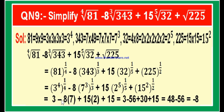This equals 3 minus 8 into 7, plus 15 into 2, plus 15. That is 3 minus 56 plus 30 plus 15. Adding positive values: 3 plus 30 plus 15 is 48, and 48 minus 56 is minus 8. By this we solve question numbers 7, 8, and 9 of exercise 1.4. All video links for the introduction to Real Numbers and all problems of exercises 1.1, 1.2, 1.3, and 1.4 are provided in the description. Thank you.